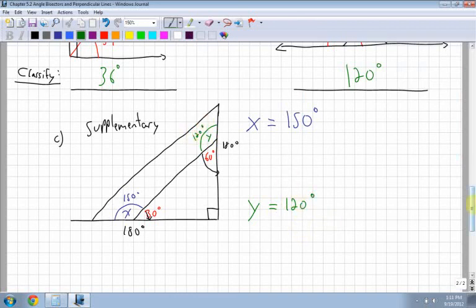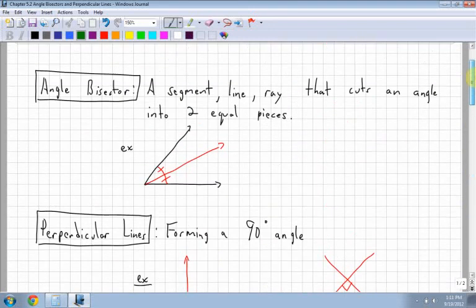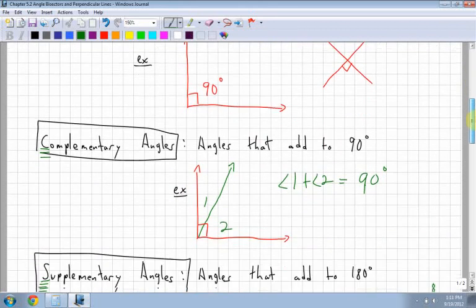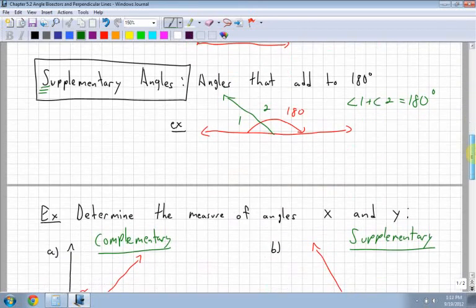So, hopefully that helps you get through the section. Remember, all the different definitions for angle bisector. Angle bisector, perpendicular lines, complementary, and supplementary angles.